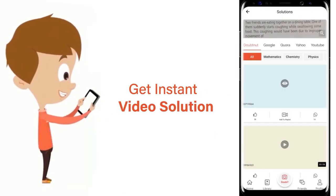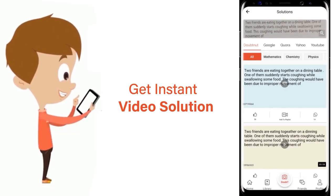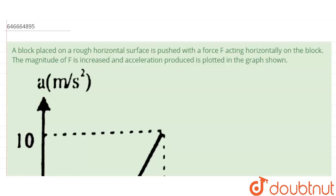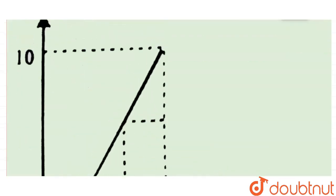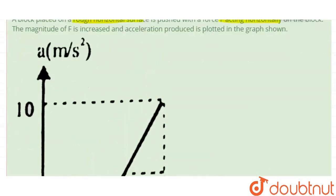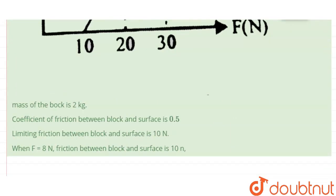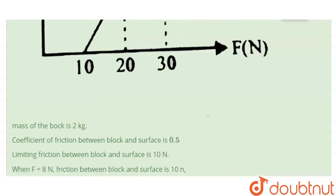The question is: a block placed on a rough horizontal surface is pushed with a force F acting horizontally. The magnitude of F is increased and the acceleration produced is plotted in a graph. This is the graph between force and acceleration, and we have to determine which options are correct.